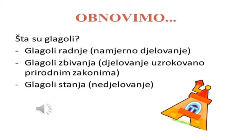Glagoli su promjenljive riječi koje označavaju radnju, stanje u kome se neko ili nešto nalazi ili neko zbivanje u prirodi. Često se desi da dođe do zabune kada treba dati odgovor o razlikama radnje, stanja i zbivanja. Te evo dodatnog objašnjenja. Glagoli radnje – namjerno djelovanje je glagolska radnja i ona se vrši svjesno i namjerno. Na primjer: hodati, kositi, pisati, pjevati.